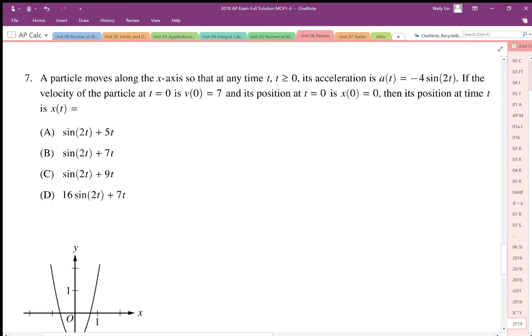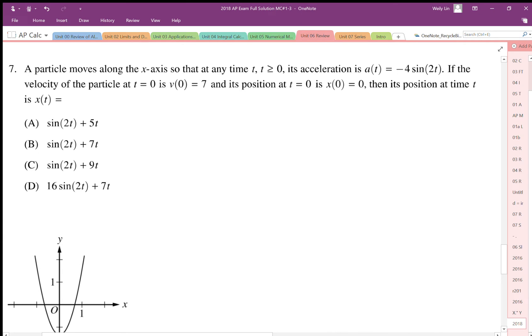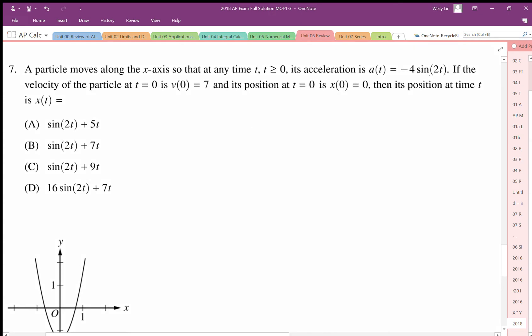So number seven says we have a particle moves along the x-axis, so the acceleration is given by negative 4 sine 2t. So we're asked about velocity and position. So in general, we can just say that the velocity is the anti-derivative of the acceleration function. We can also say that the position function, which we'll call x in this case is the anti-derivative of the velocity function.